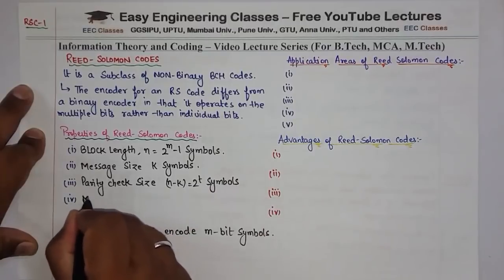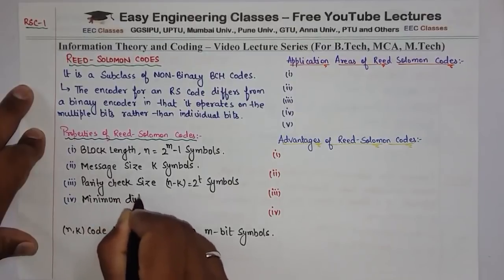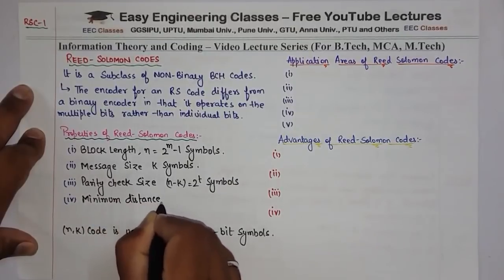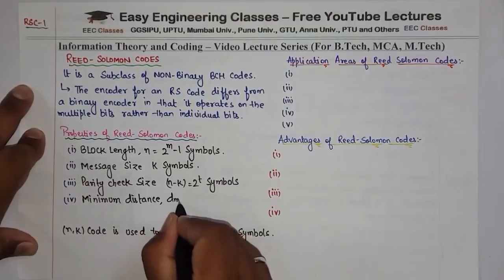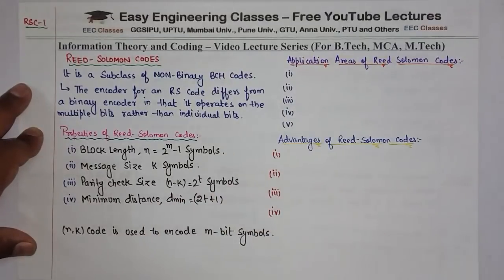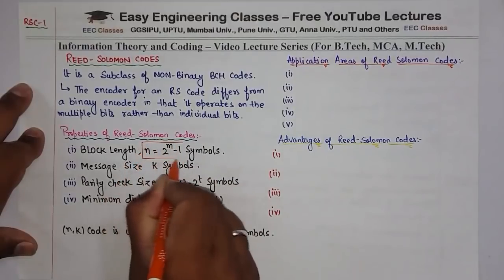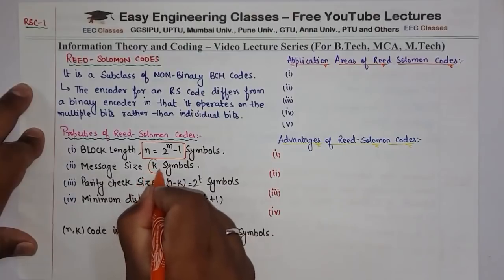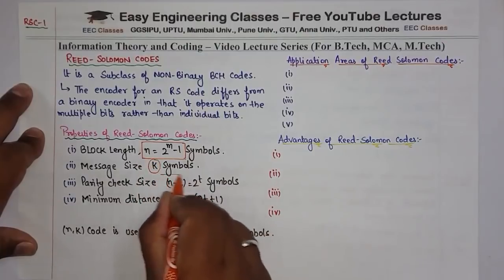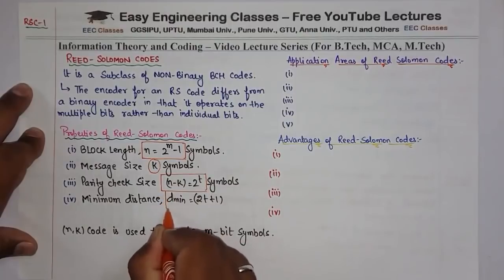Then finally we have the minimum distance. Minimum distance, जिसे d_min भी कहते हैं, वो होता है 2t + 1 symbols. So these are the properties of Reed Solomon Codes, and as you can see some properties are exactly the same as BCH Codes, क्योंकि ये BCH codes की subset है।